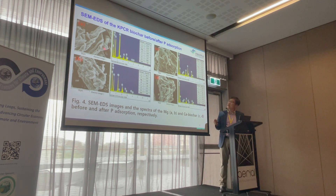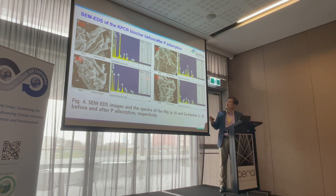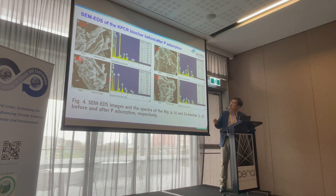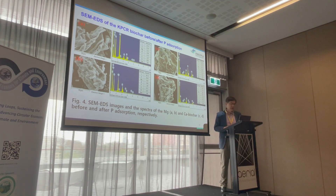This shows SEM/EDS photographs of KPCR biochar before and after phosphorus adsorption. Phosphorus content is quite low before adsorption and significantly increased after adsorption. Most elemental components are carbon, oxygen, and magnesium. Magnesium-impregnated biochar and calcium-impregnated biochar show high respective metal content. Phosphorus content was 0.23% before adsorption and increased to about 0.7% after adsorption from EDS analysis.